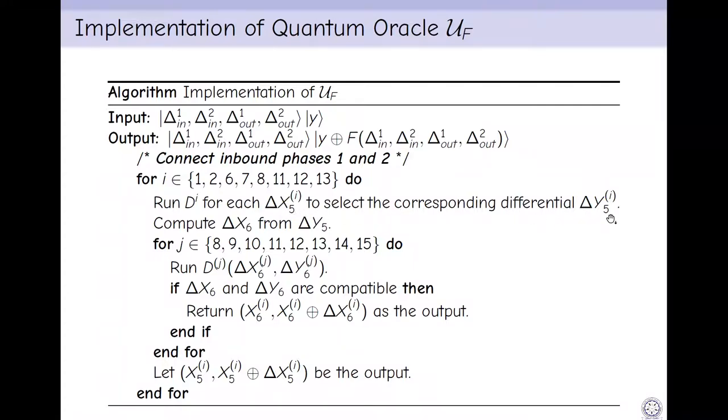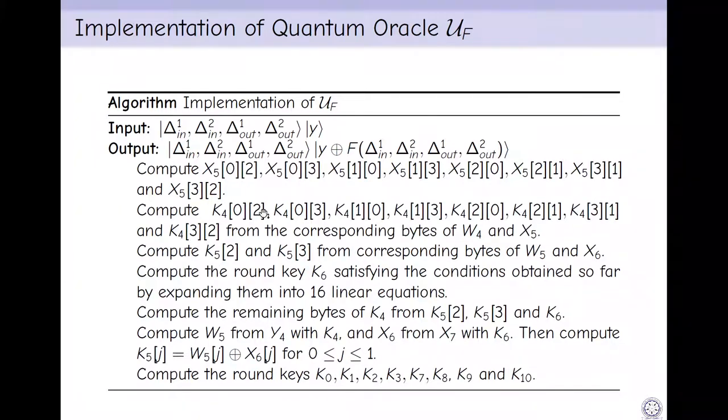We then compute Δx5 from Δw4 and Δy6 from Δz6. We connect these inbound phases 1 and 2 in round 5. We run Di for each Δx5[i] to select the corresponding differential Δy5. We compute Δx6 from Δy5. Then for j belonging to the positions 8, 9, and 15, we run Dj on input (Δx6[j], Δy6[j]). If Δx6 and Δy6 are compatible, then we return x6[i], x6[i]⊕Δx6[i] as the output. We also output x5[i], x5[i]⊕Δx5[i] as corresponding output. We then compute the bytes of x5 and also compute the bytes of k4 from the corresponding bytes of w4 and x5. Following the other details of the algorithm, we finally compute the round keys k0, k1, and so on to k10.